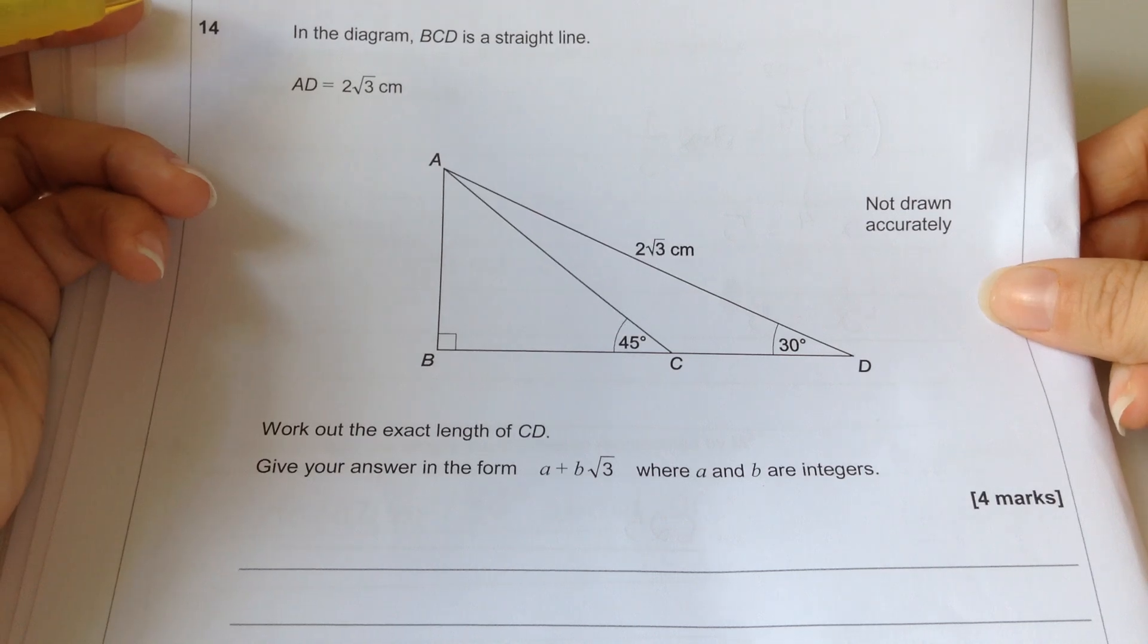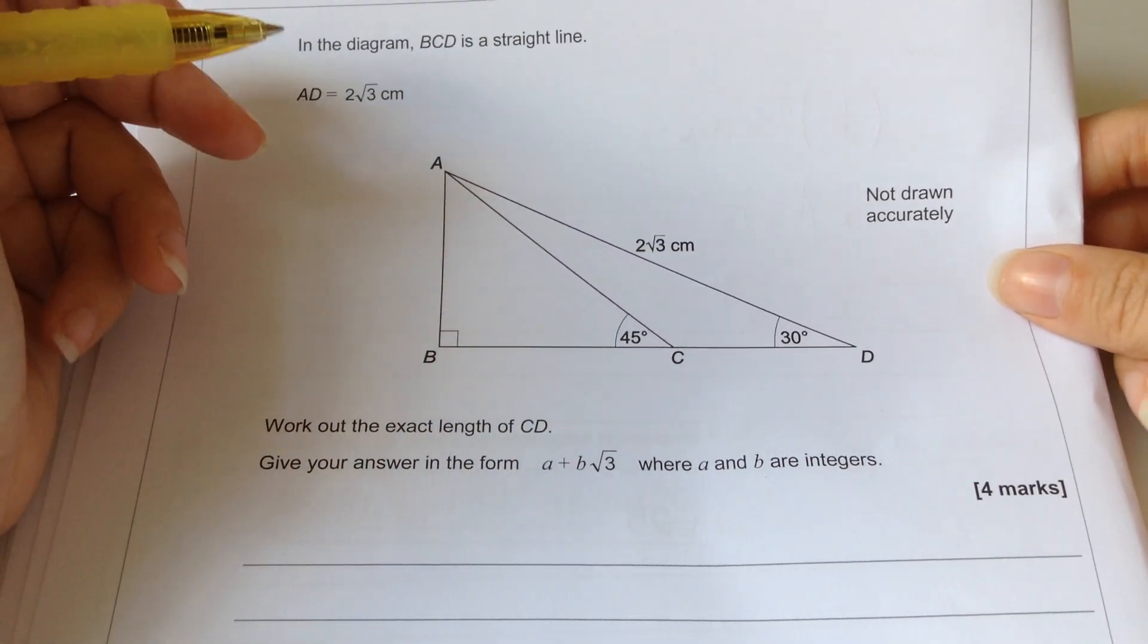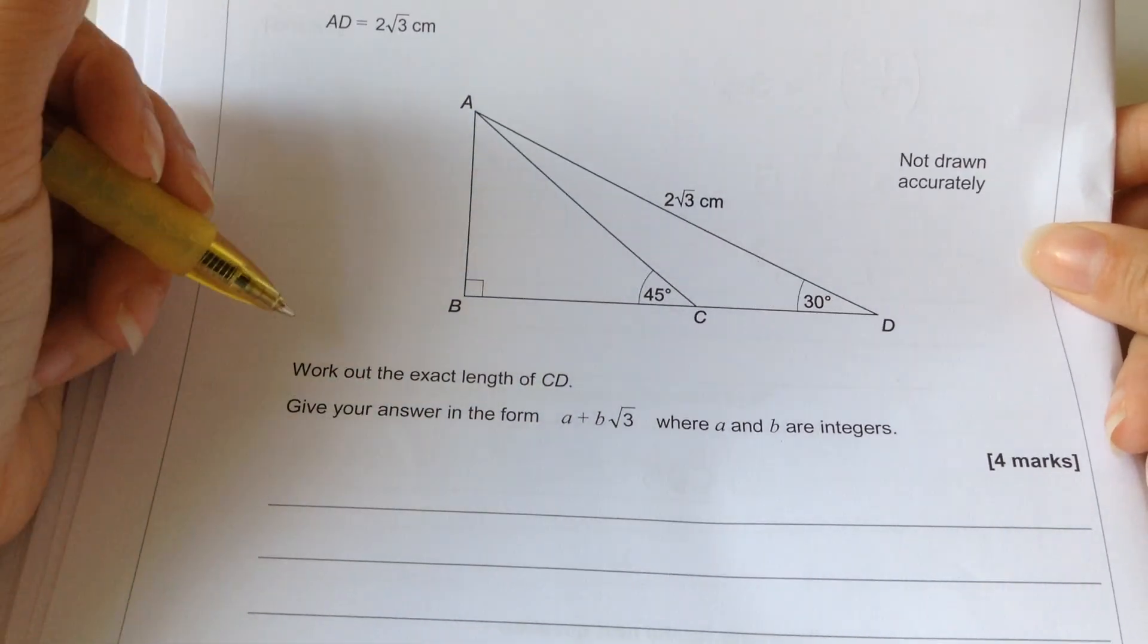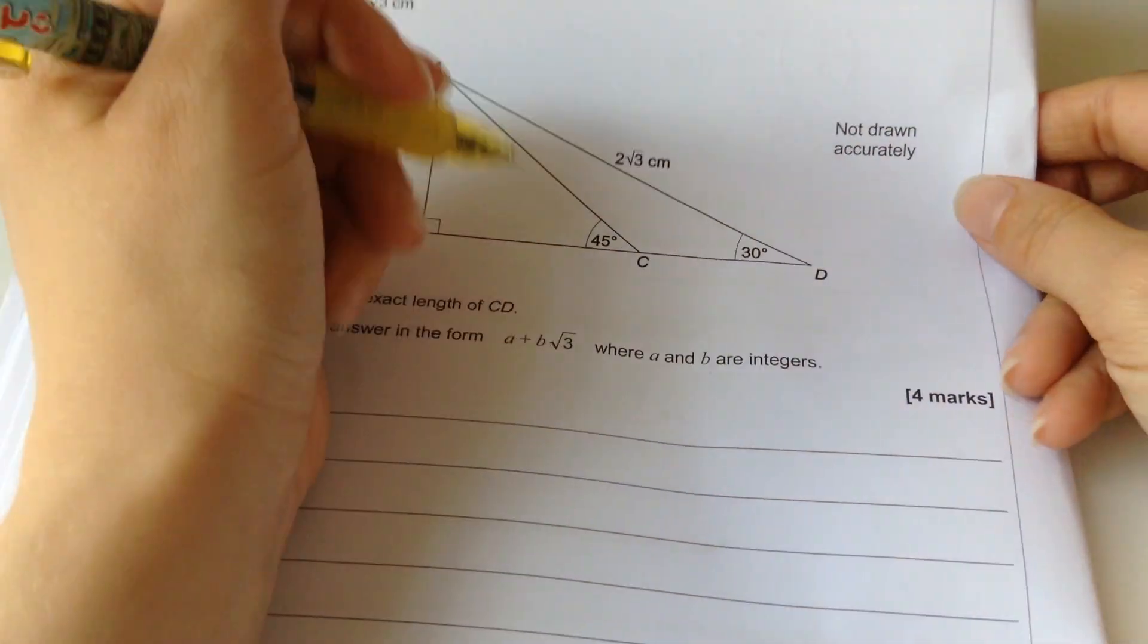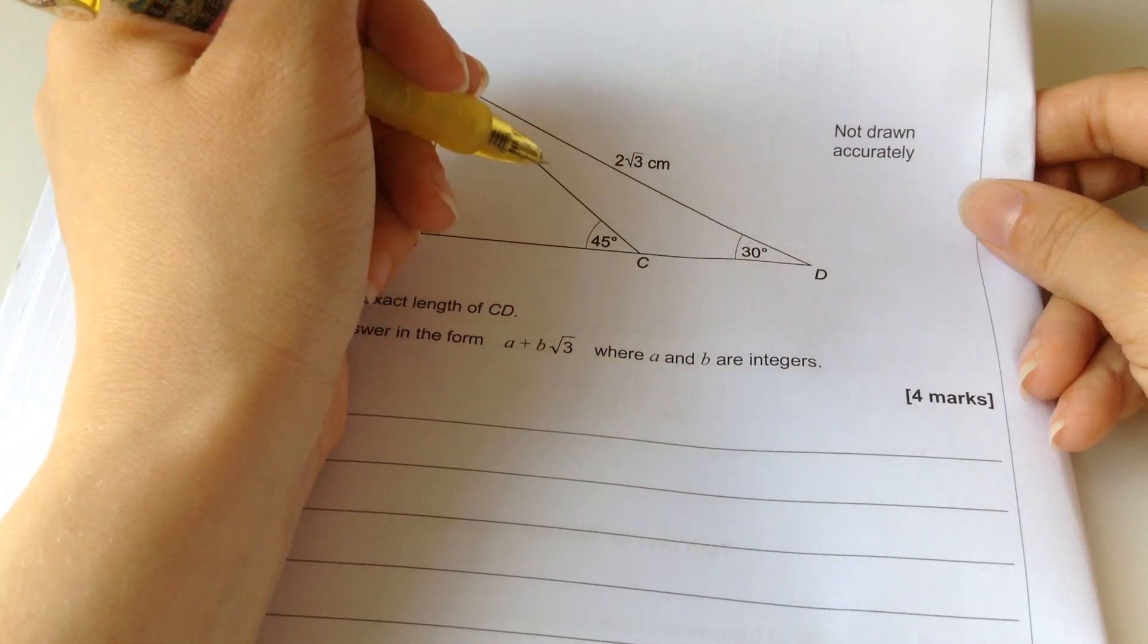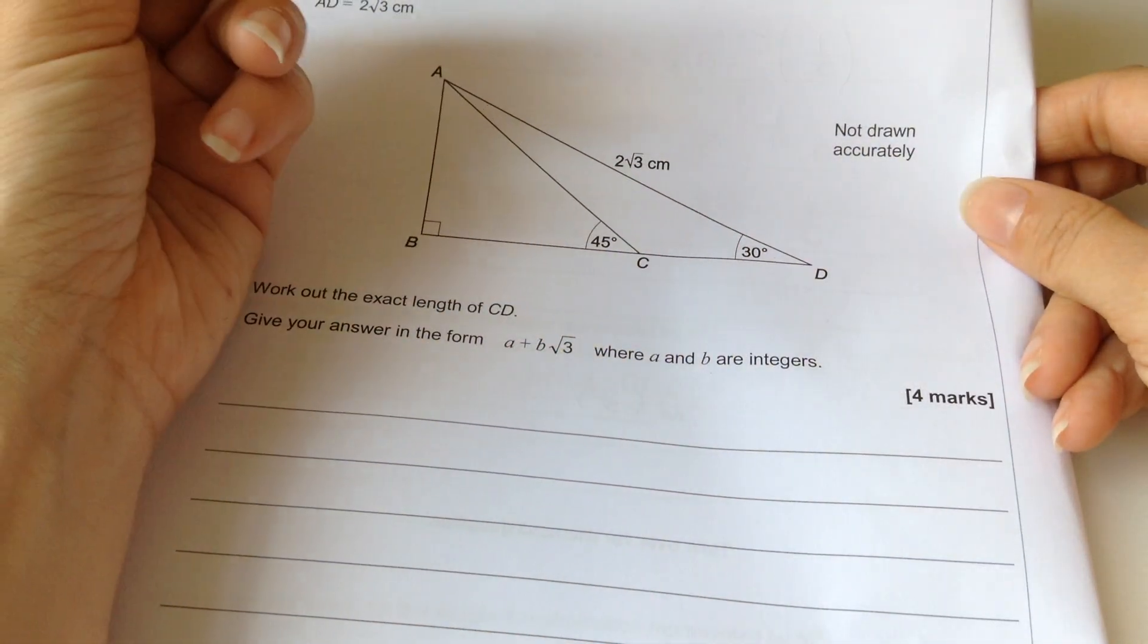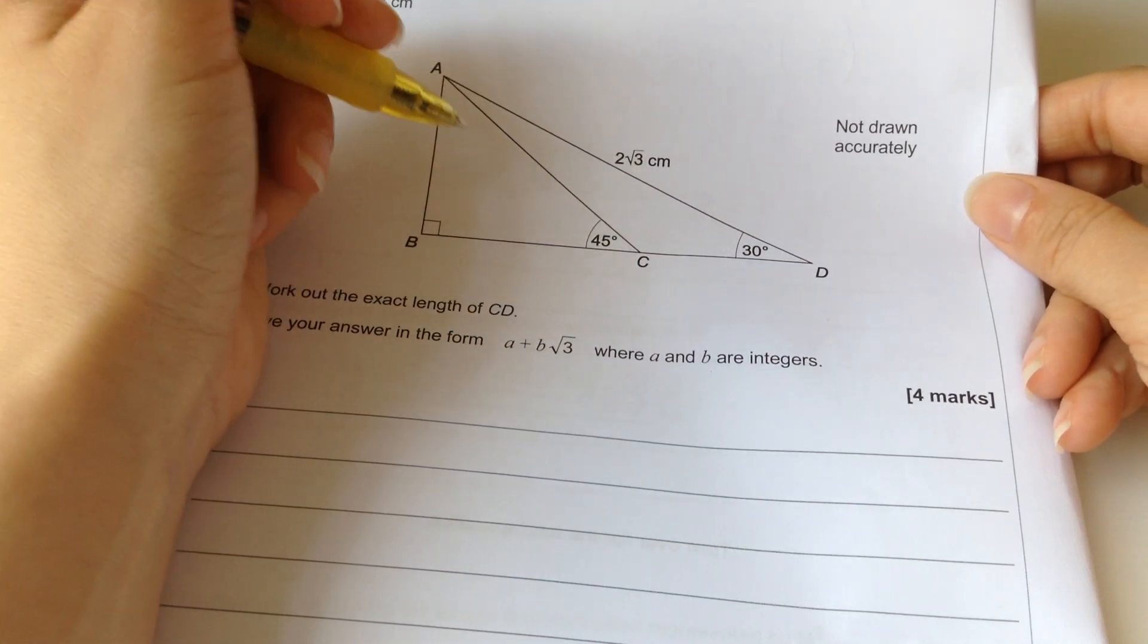So, we've got some triangles. We've got a 2 root 3, so it's definitely going to involve some 30 degrees and some 60 degrees. Work out the exact length of C to D. Okay, right. This is going to be one of those where you work out B to C, and you work out B to D, and then you take away. What should we do first? Let's do B to D first.